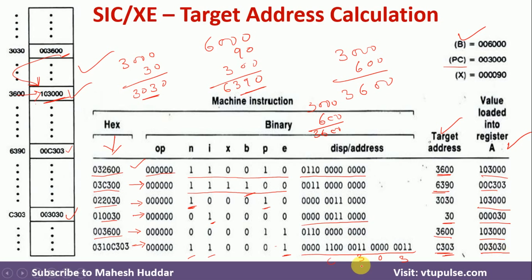In this video I discussed the different addressing modes available in SIC-XE, as well as how to calculate the target address given the hexadecimal code or object code. I hope the concept is clear. If you have any questions, you can put them in the comment box and I will try to answer them. If you like the video, do like and share with your friends, and press the subscribe button for more videos.